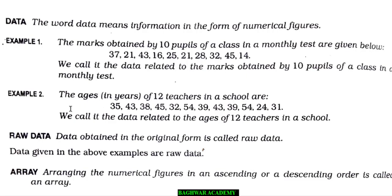Here you see a second example has been given: the ages of 12 teachers in a school. Suppose in your school 12 teachers are there and their ages are 35, 43, 38, 45 and so on. So these data again are in numerical form and that is why these will be called data. I hope you understood — and again I am telling you, this definition with example is going to come in exam. So you must remember and note down in your copy the definition as well as the example.